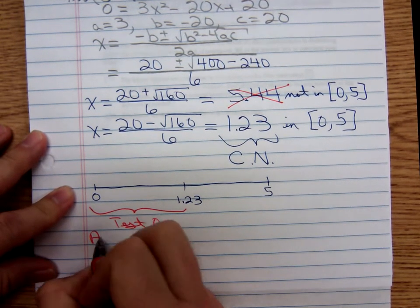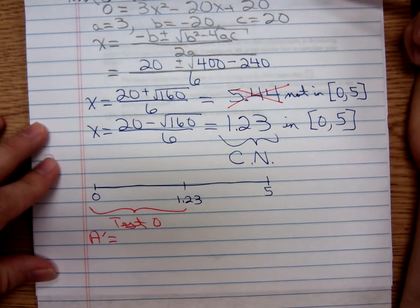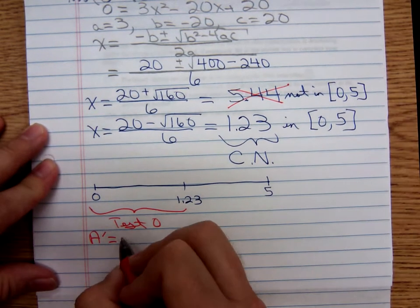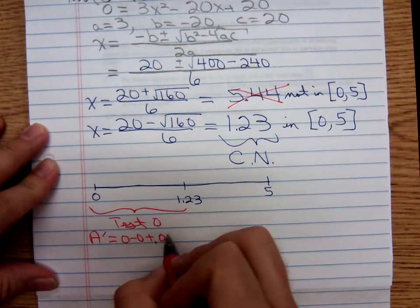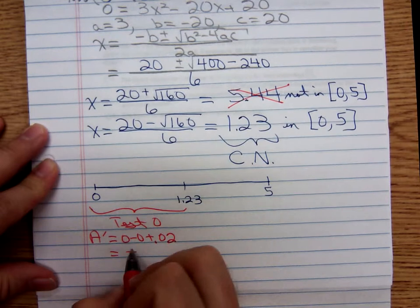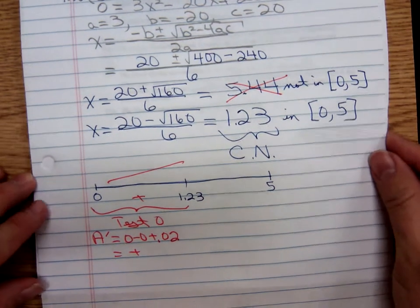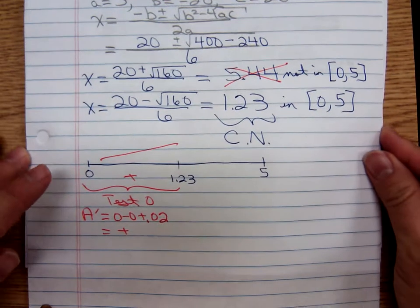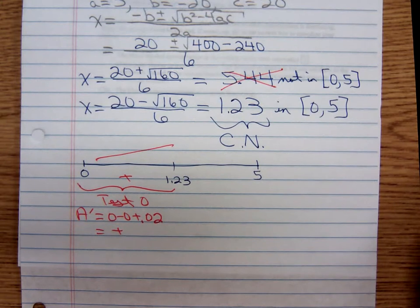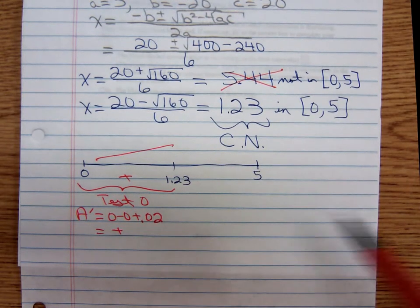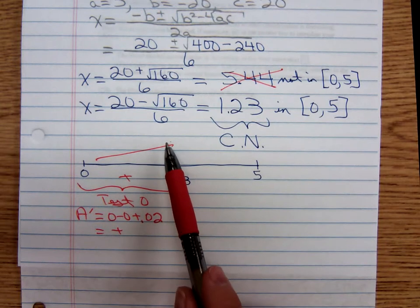Zero, that's going to give us A'(0) equals zero minus zero plus 120... not plus 120, plus 0.02. That's positive. So increasing. If I had been guessing I would have said knowing the way the liver works, you drink that hard liquor, your body starts absorbing the alcohol so the amount of alcohol in your bloodstream is increasing, but eventually